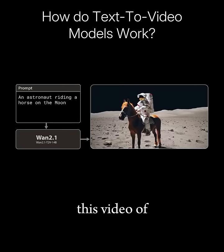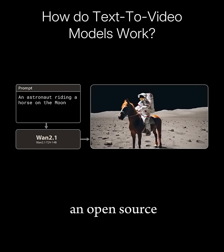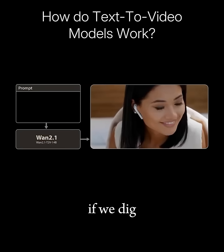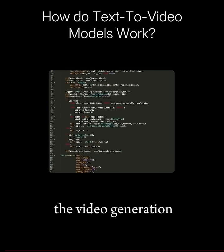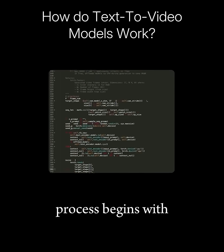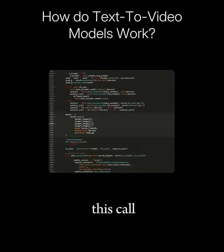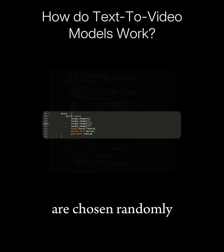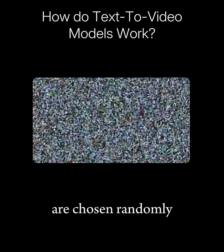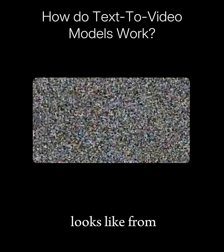This video of an astronaut was generated by an open source model called WAN 2.1. If we dig into our WAN model's source code, we'll find that the video generation process begins with this call, creating a video where the pixel intensity values are chosen randomly. Here's what it looks like.